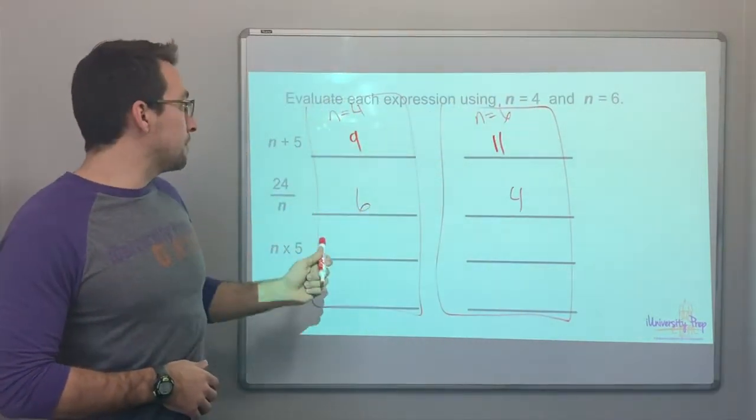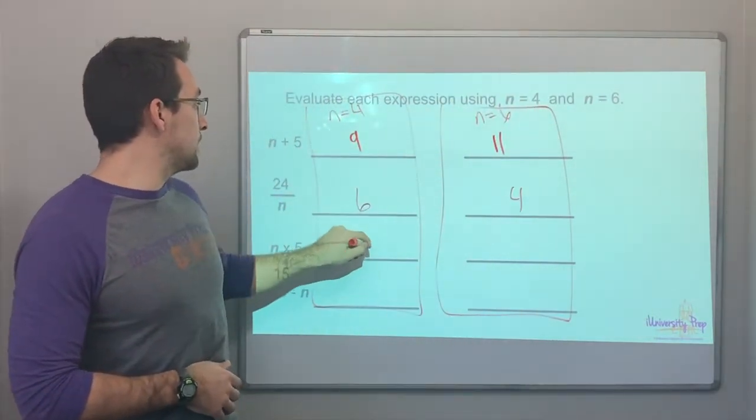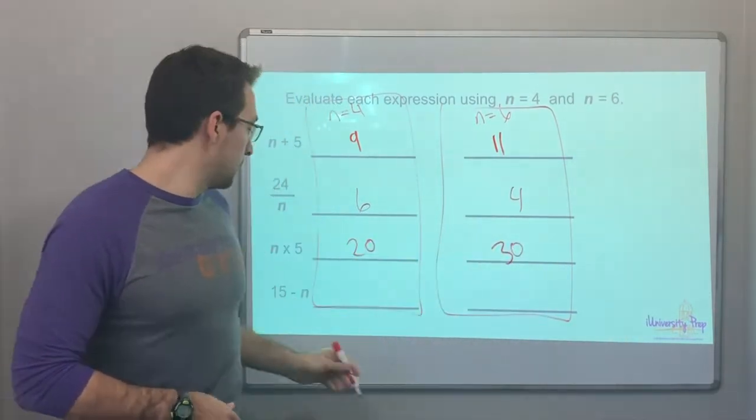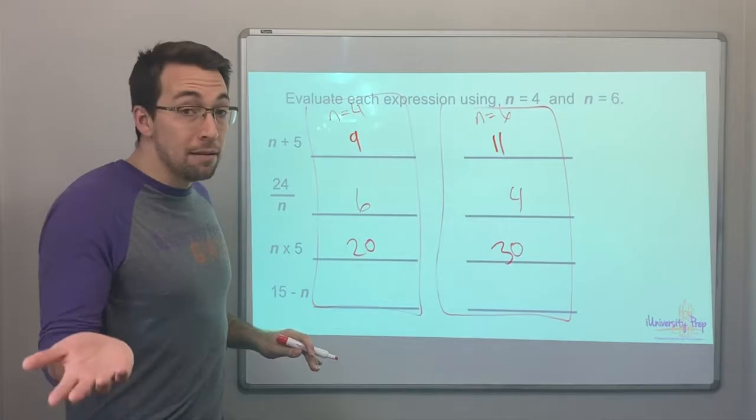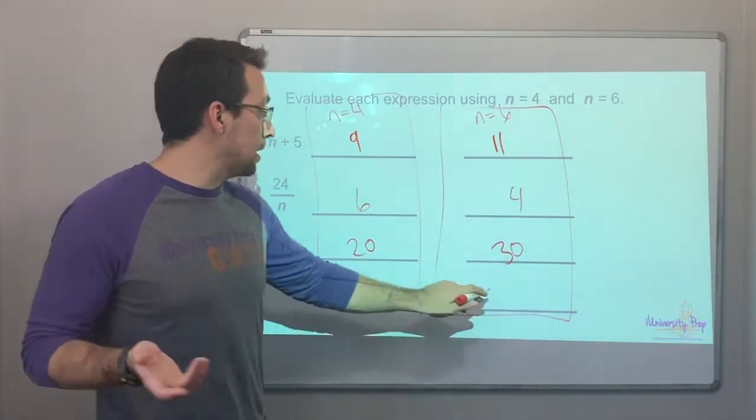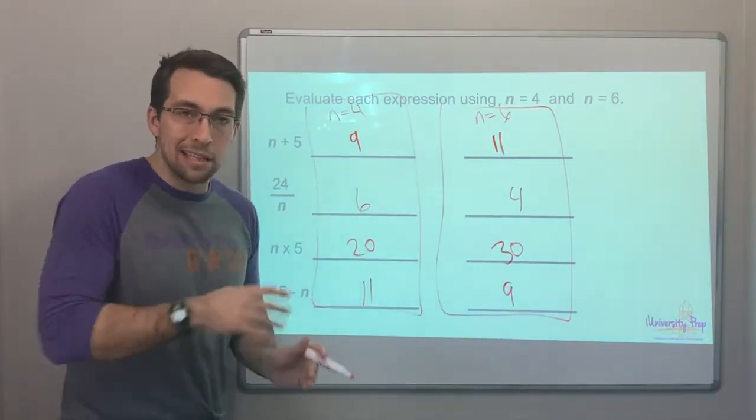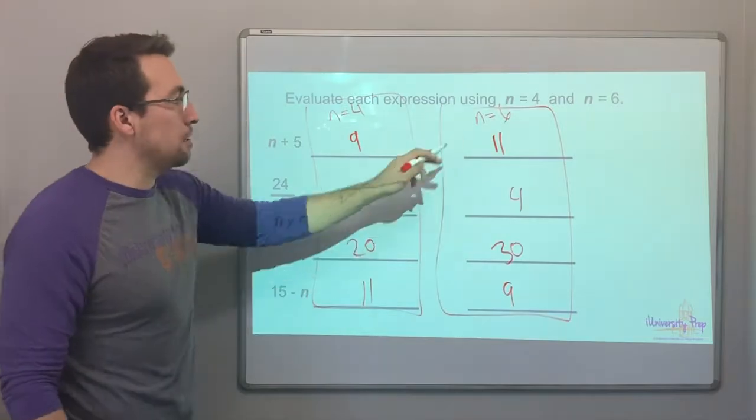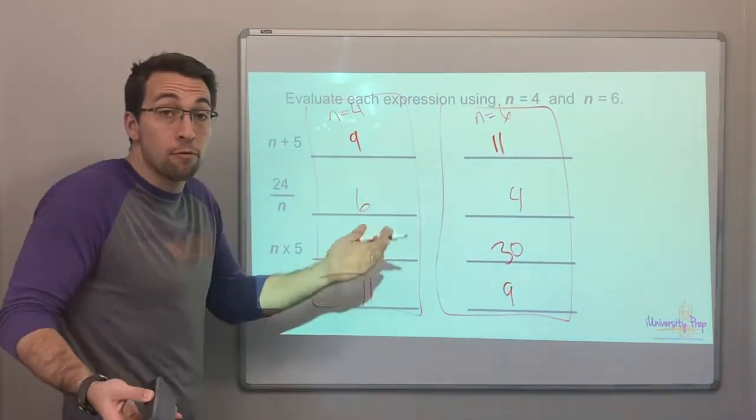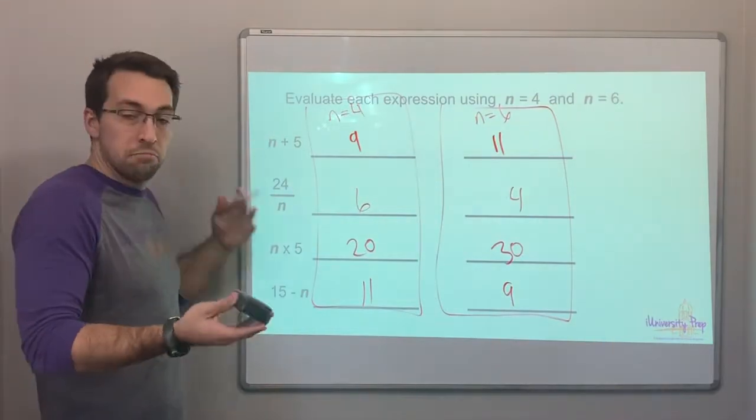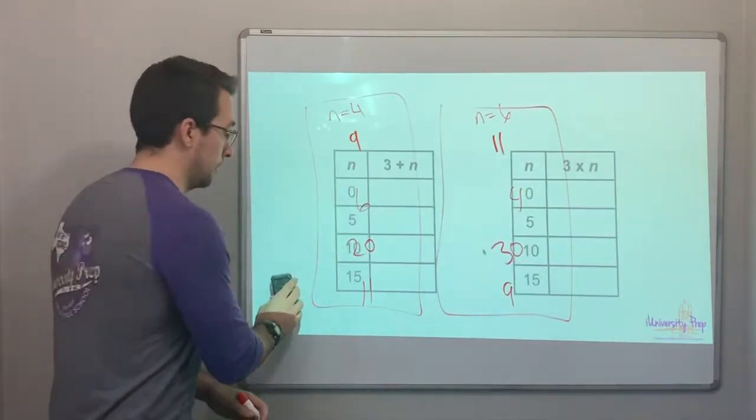n times five. Four times five is twenty. Six times five is thirty. n minus five. n minus four is eleven. n minus six is nine. So this is a great example of just evaluating expressions. You have to substitute the number for the variable. So if n is four or n is six, you just substitute it in.